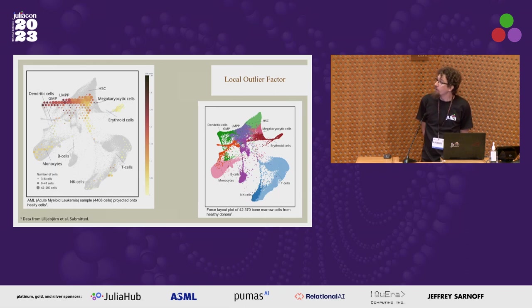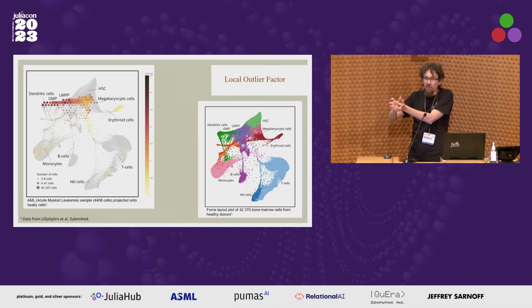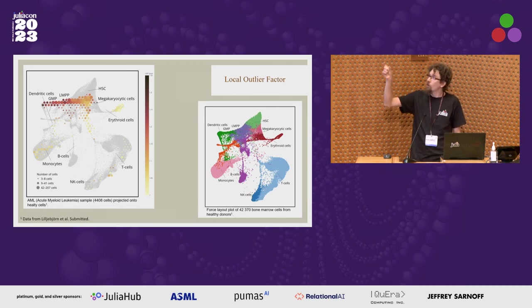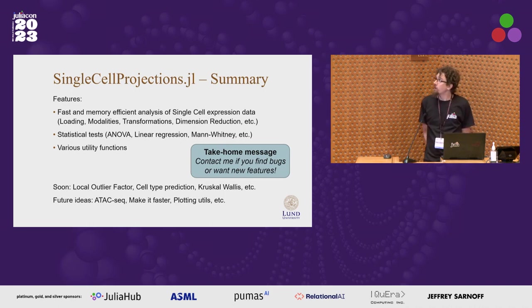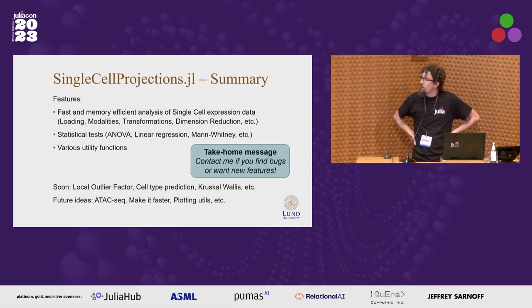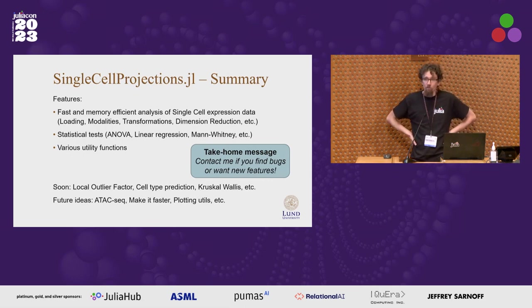Another useful visualization is scoring how different the projected cells are from the healthy reference. I use the local outlier factor — a score for how well a cell fits in the reference space — to highlight cells that are really different from healthy cells, which is where you may want to focus attention. To summarize: this is a fast, memory-efficient tool for single cell expression data, with more features than I had time to cover and more on the way.